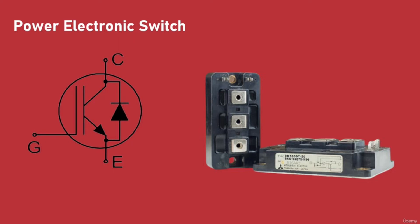We can see the schematic representation and the real photo of a semiconductor switch — in this case it is an Insulated Gate Bipolar Transistor, or IGBT for short. These power electronic switches are able to turn on and off at high switching frequencies ranging from hundreds of hertz up to hundreds of kilohertz.